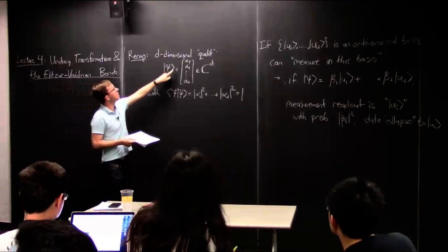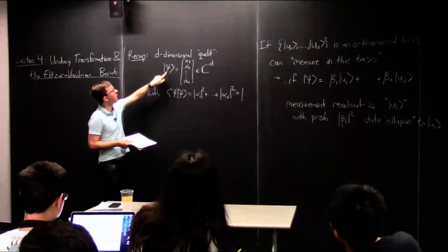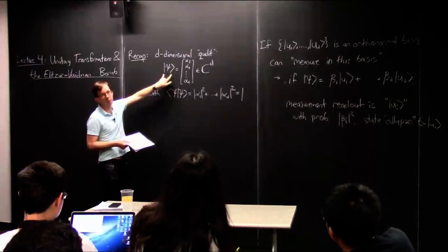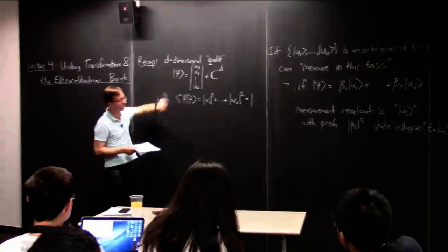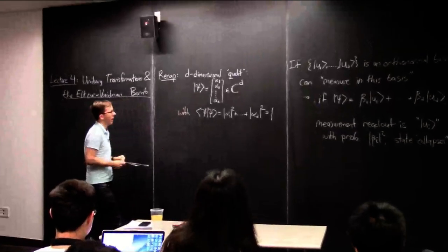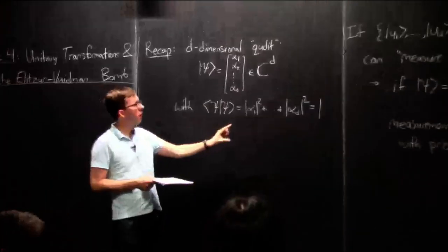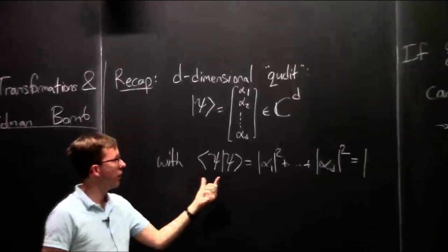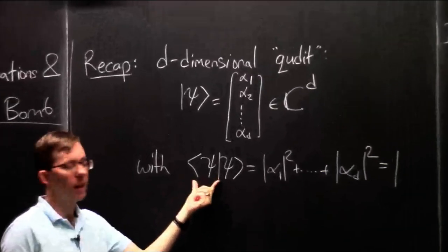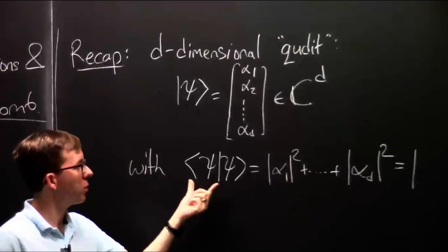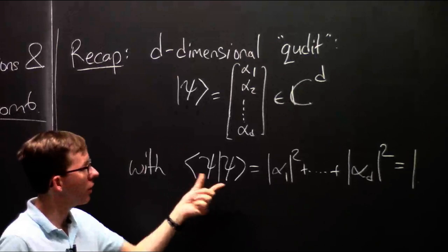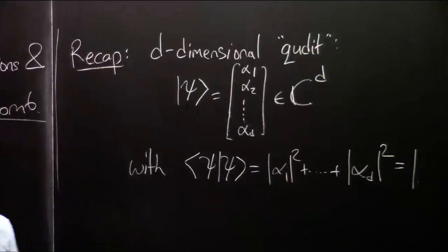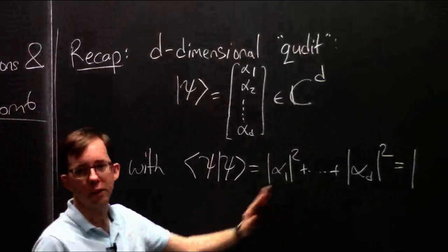This symbol means that psi is the name of a column vector. The associated row vector with complex conjugates is psi in the opposite brackets. This means the matrix product between the row vector and the column vector, which is the inner product of psi with itself, which is the squared length of the vector.